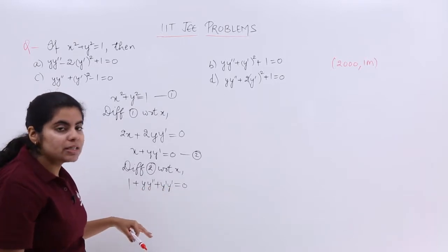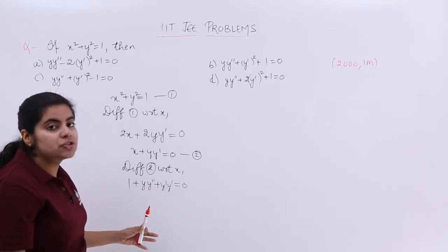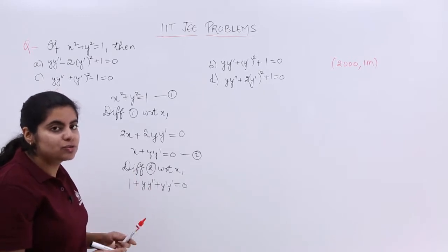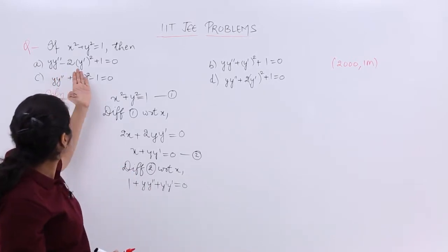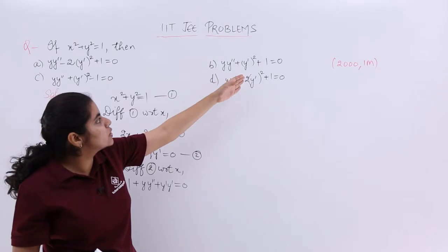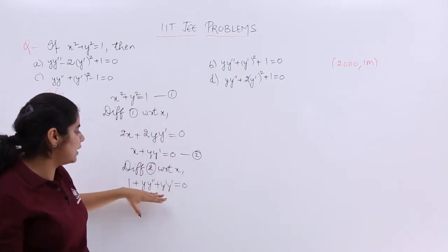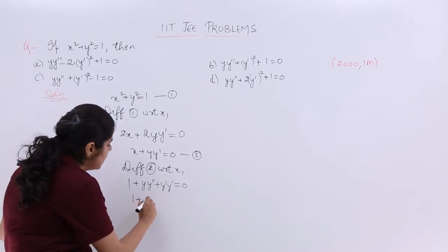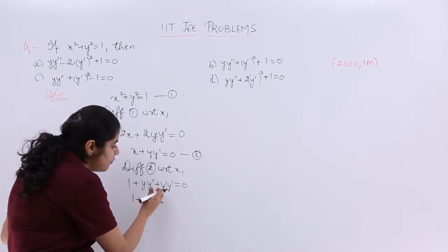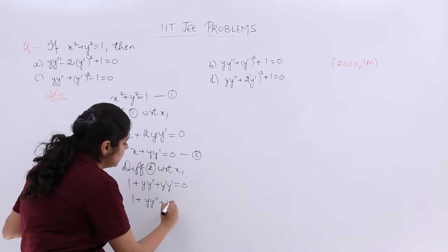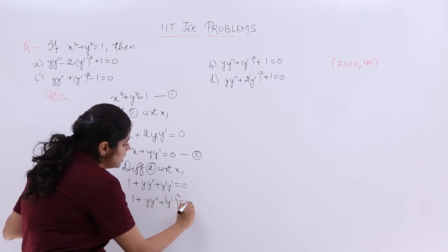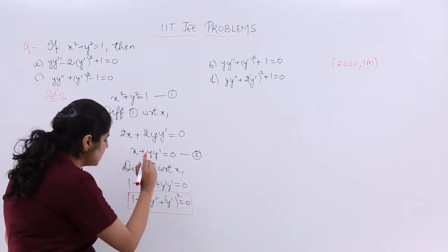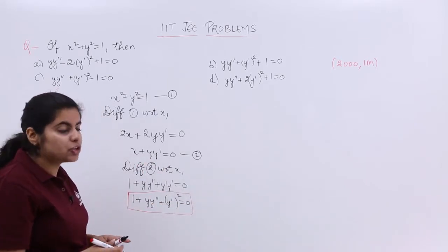Now you can see that yy'' is there, here also yy'' is there. So it is nothing but 1 plus yy'', y' multiply by y' is nothing but (y')² equals 0. So this is the final equation and this final equation, let us see which option it matches.